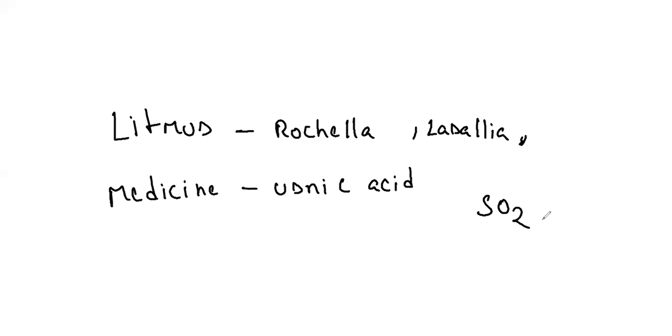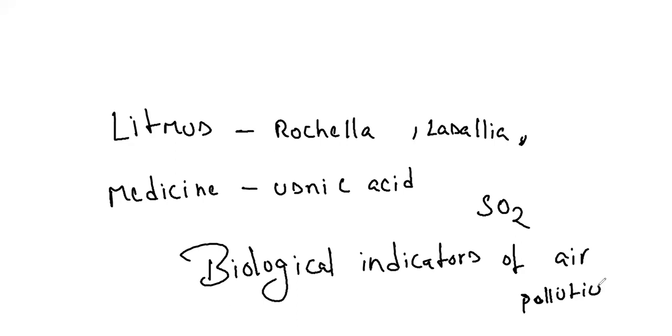You cannot find lichens in industrial or urban areas where the atmosphere is polluted with high SO2 levels. Therefore, lichens are the best biological indicators for air pollution. These are some very important points about lichens.